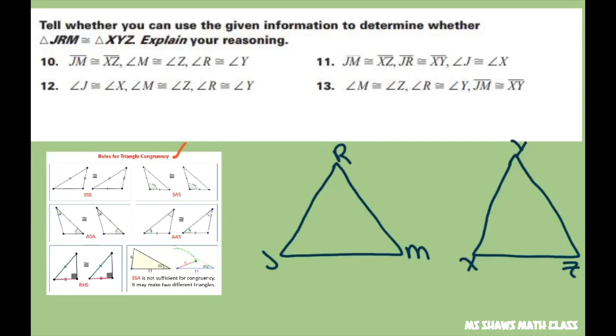So for the first one we have JM is congruent to XZ. And then we have angle M is congruent to angle Z, and angle R is congruent to angle Y. So I'll put two here. So we have two different angles. And this is angle angle side. So we have angle angle side, and so that's yes. It follows the rules for triangle congruency.